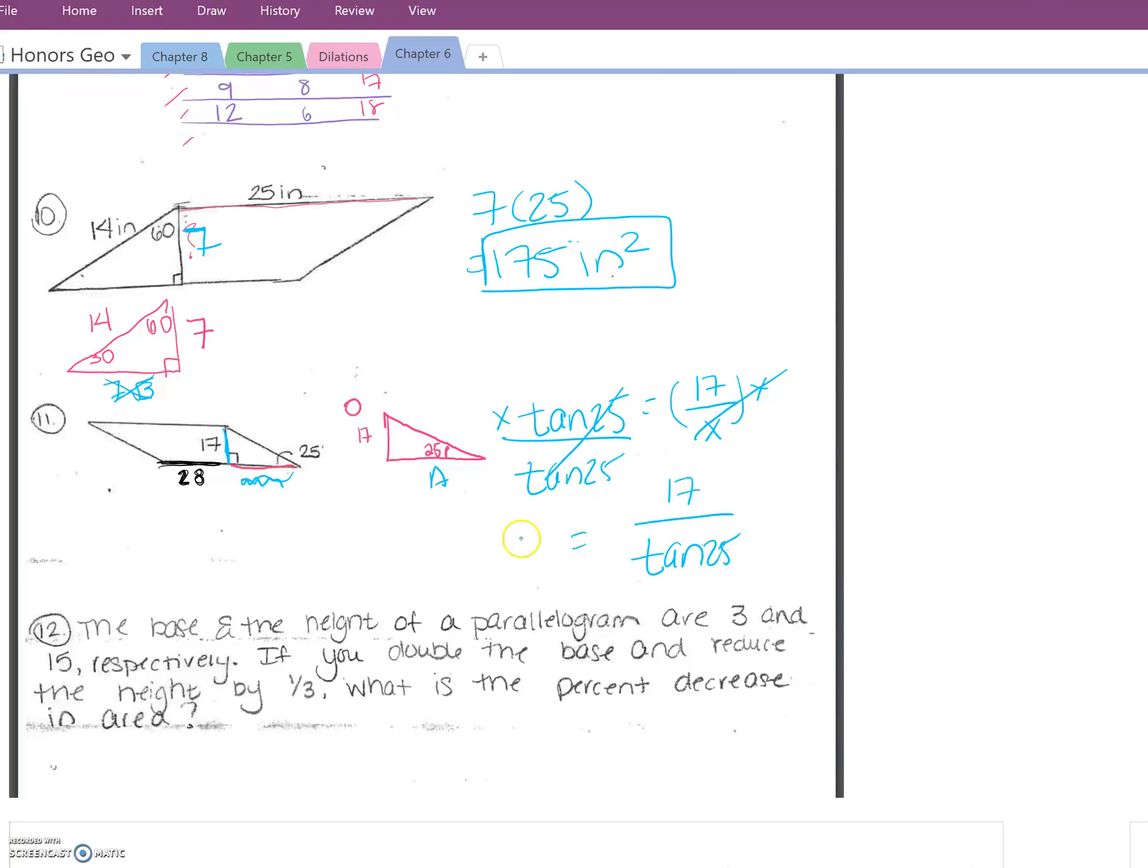So 17 over tangent 25, make sure you're in degrees, and you should get about 36.46. 36.46, that's just the length of the blue. So now I'm going to add this together with the black segment, and the length of the entire base is approximately 64.46. That's the base. Now just multiply it by the height. Remember the height was 17, and you should get 1095.82.